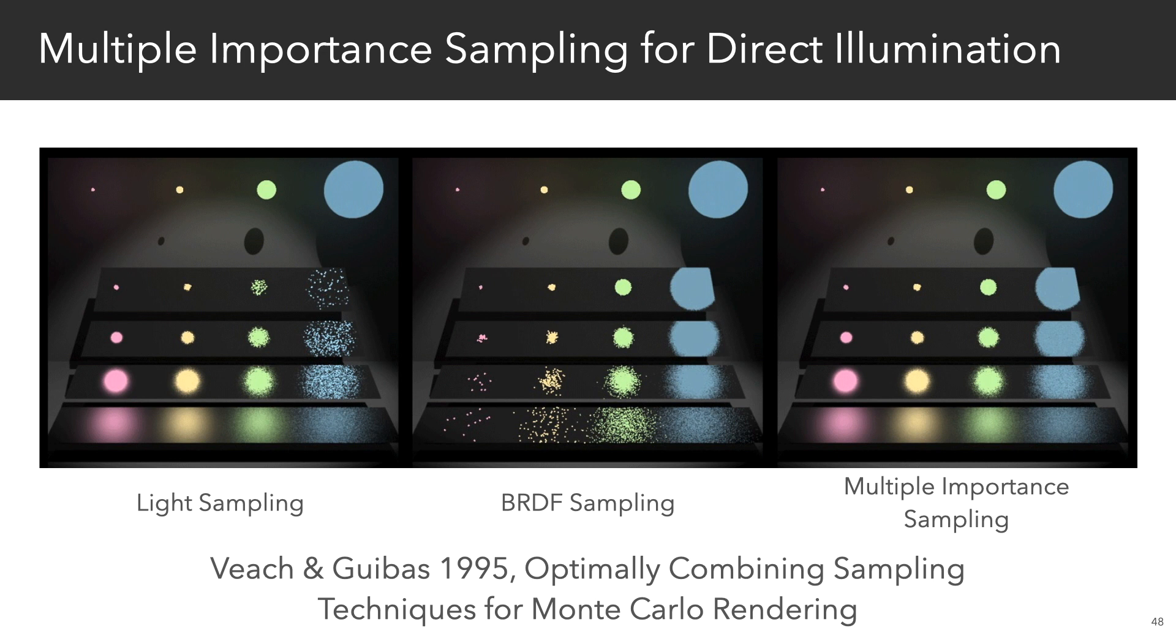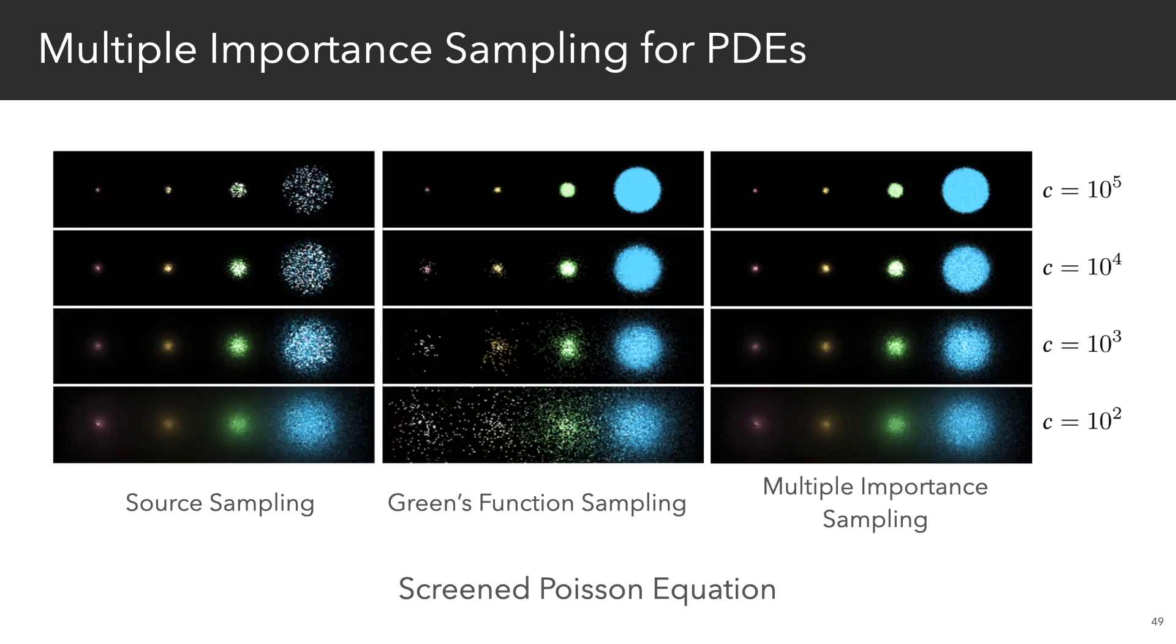In rendering, Veach and Guibas proposed an unbiased algorithm to important sample lights and materials simultaneously for direct illumination. In our work, we used their multiple importance sampling strategy to simultaneously sample the source terms and the greens functions of the screened Poisson equation, which helps us bring down the variance compared to just sampling one of these functions.